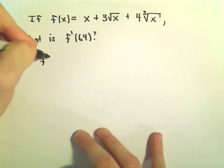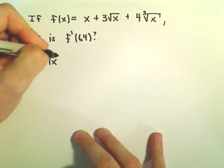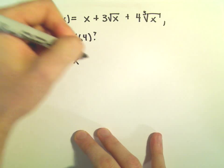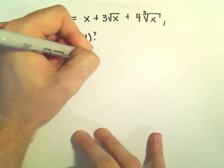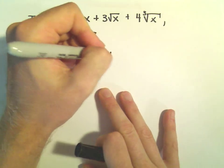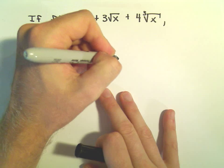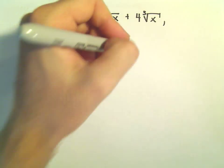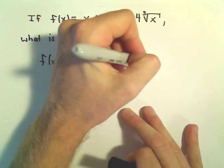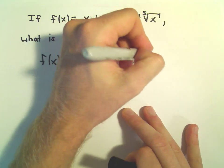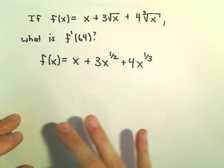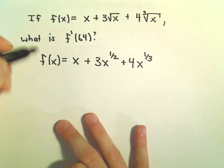The first thing I'm going to do is just rewrite this. I'll leave the x alone. The square root of x we can write as x to the 1 over 2, and the cube root of x we can write as x to the 1 over 3.